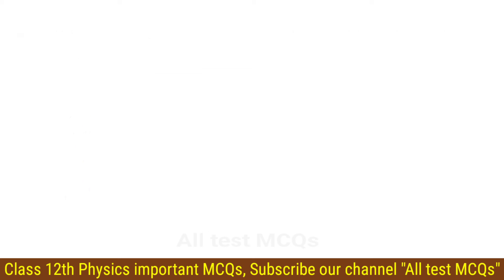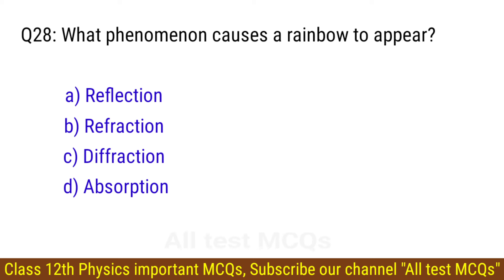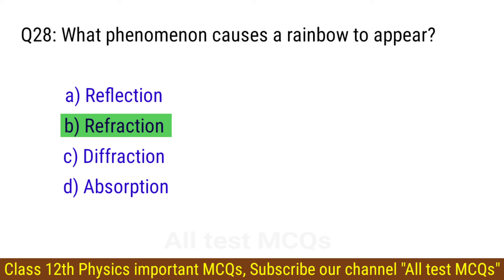Question number 28. What phenomenon causes a rainbow to appear? The right answer is option B: Refraction.